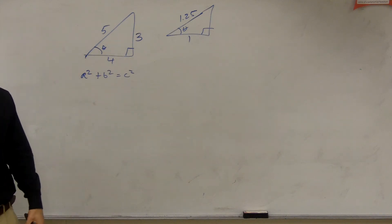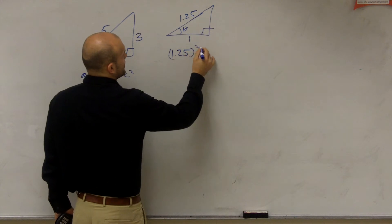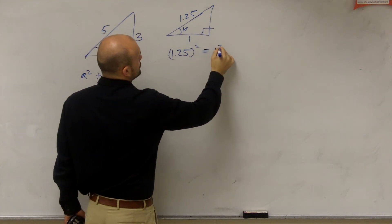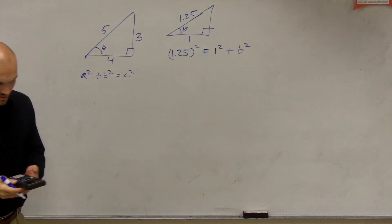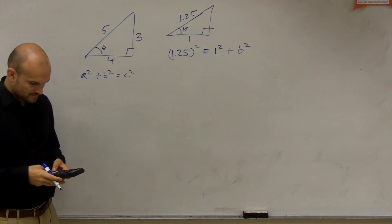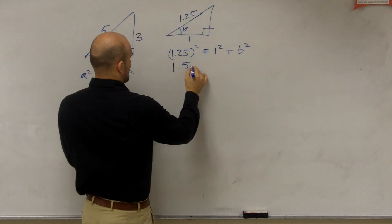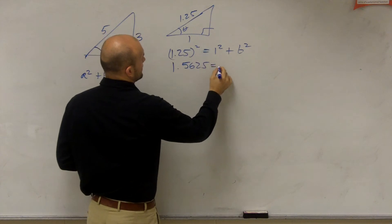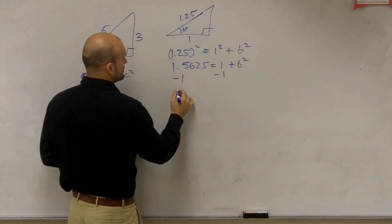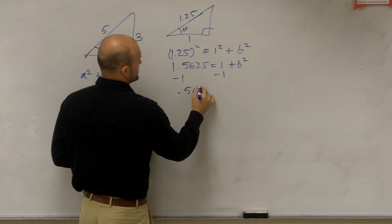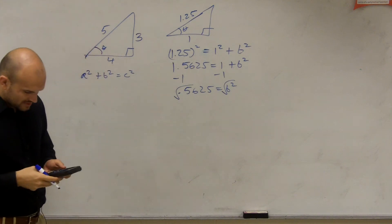Now I don't know exactly 1.25, so I'm actually going to do the math for that one. So 1.25 squared is equal to 1 squared plus, let's call this B squared. So I do 1.25 squared, and I get 1.5625 equals 1 plus B squared. So I minus 1, and I get 0.5625 equals B squared.